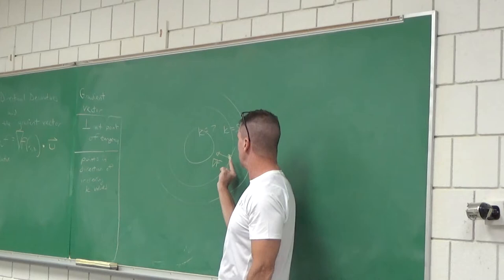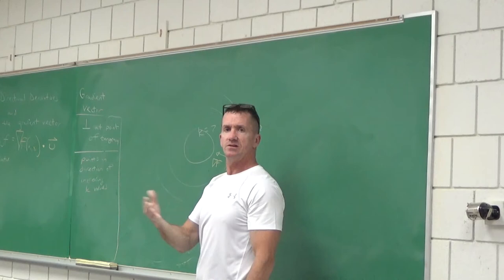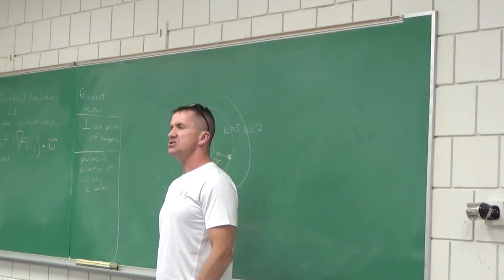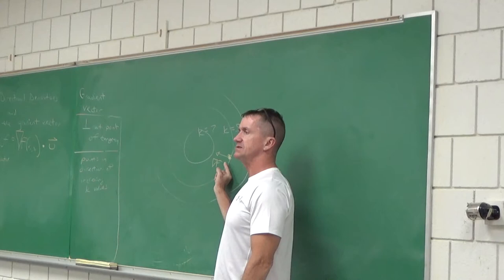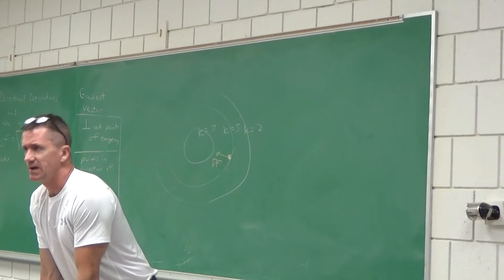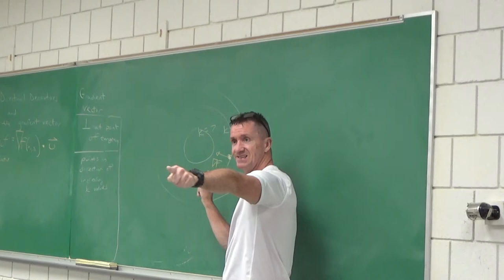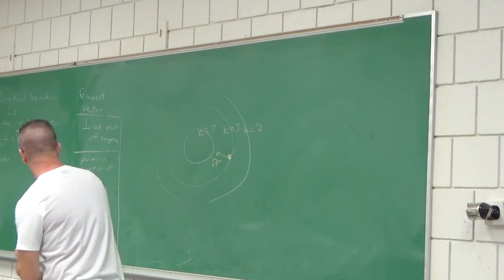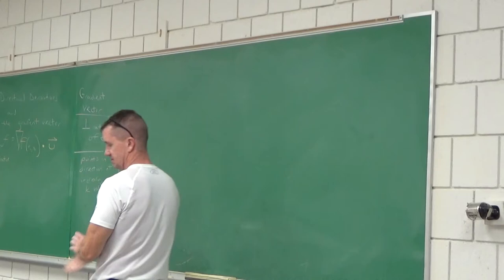On a test if I say draw a gradient vector, I might say draw a unit vector in the direction of the gradient vector. You'd make sure to draw it perpendicular to the point of tangency, pointing in the direction of the increasing k values. Now I want to talk more about this formula — can we prove what the maximum value of the directional derivative would be?